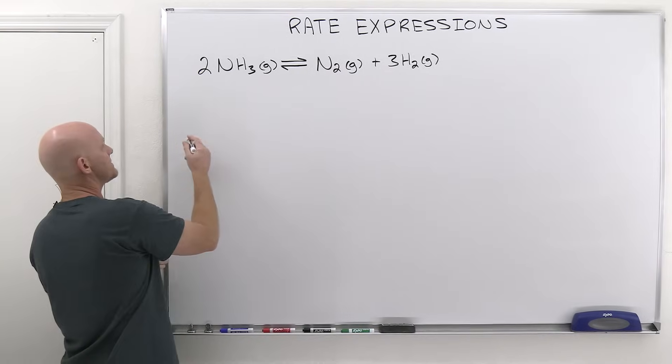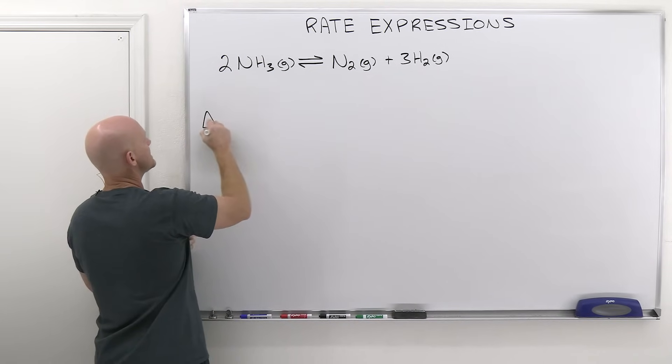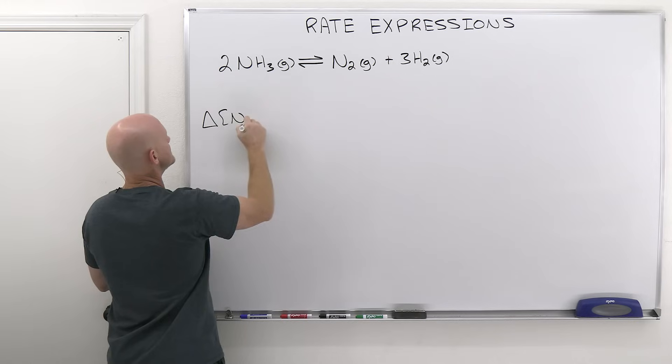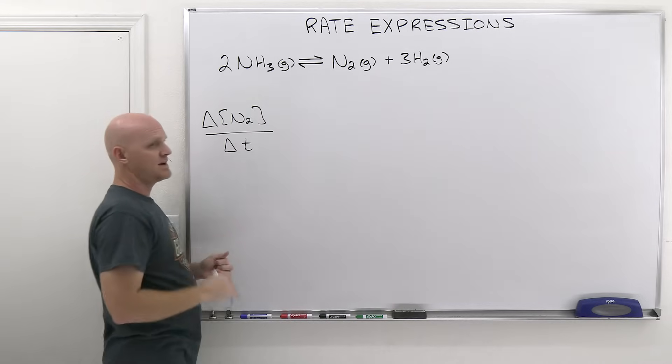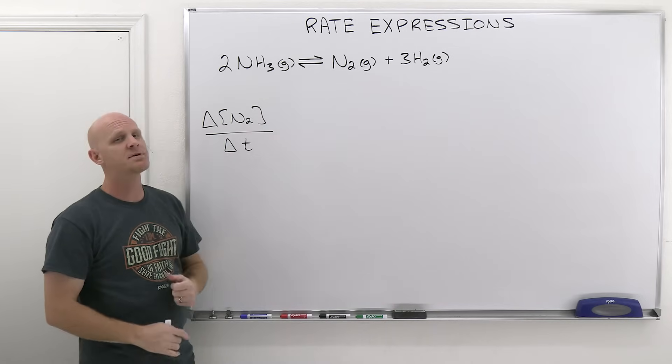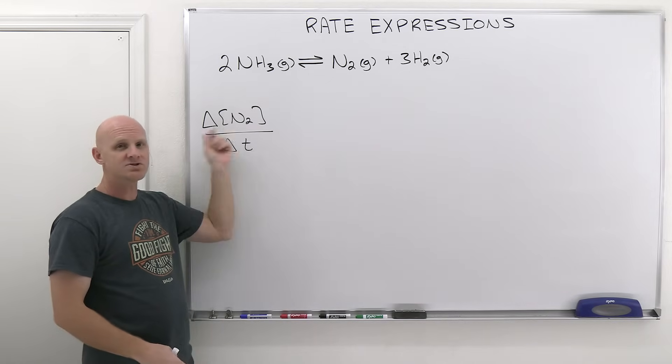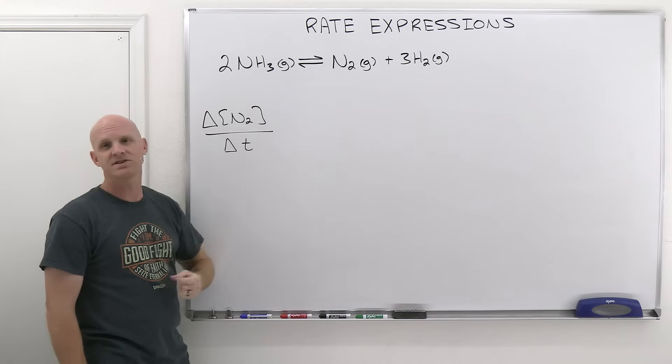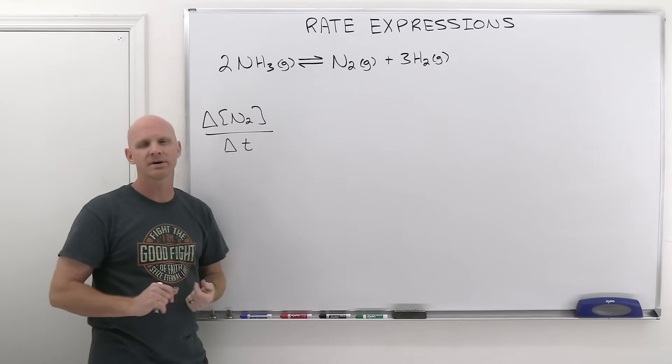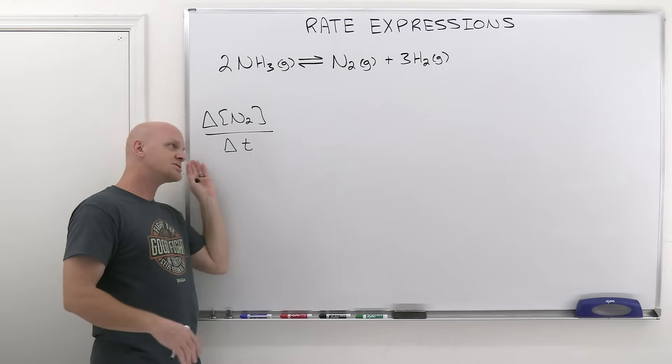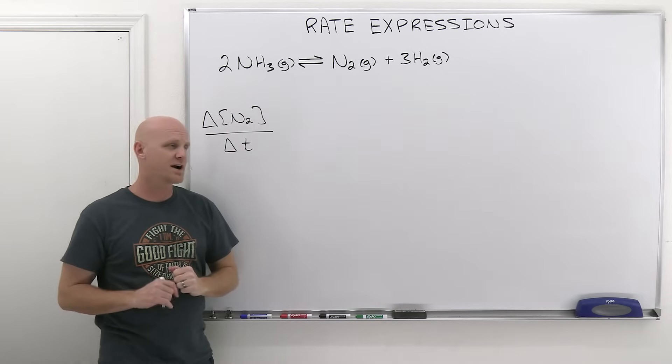If we take a look, we'd often measure this rate as change in the concentration of N2 over change in time. Any time you look at that change, just remember that's final minus initial. So delta N2 here would be final concentration of N2 minus initial concentration of N2. Change in time is just passed time, T final minus T initial. But since T initial is usually zero, it's usually just whatever duration of time we're talking about.